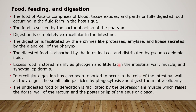How does feeding and digestion take place in Ascaris? The food of Ascaris comprises blood, tissue exudates, and partly or fully digested food occurring in fluid form in the host's gut — it gets ready-made food from the human host as it is an endoparasite. The food is sucked by the suction action of the pharynx, whose thick muscular walls help in contraction and relaxation to suck food. The digestion is completely extracellular in the intestine, facilitated by enzymes like proteases, amylase, and lipase secreted by the gland cells of the pharynx.